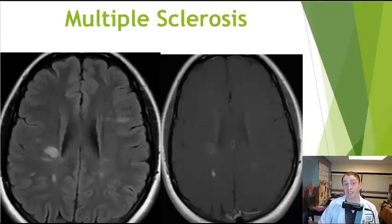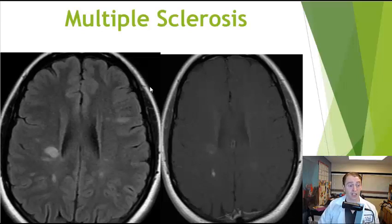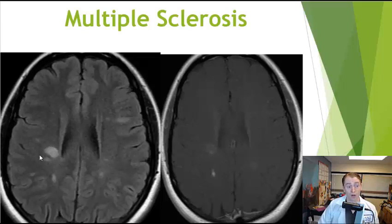Let's look at some MRI scans of different causes of transverse myelitis. The C2 lesion shown earlier was in someone with multiple sclerosis. In this condition, lesions are usually also present in the brain, which is why an MRI of the brain is generally recommended — this is by far the most common chronic autoimmune disease causing transverse myelitis. Here you can see T2-bright ovoid lesions typical of multiple sclerosis, some of which take up contrast dye.